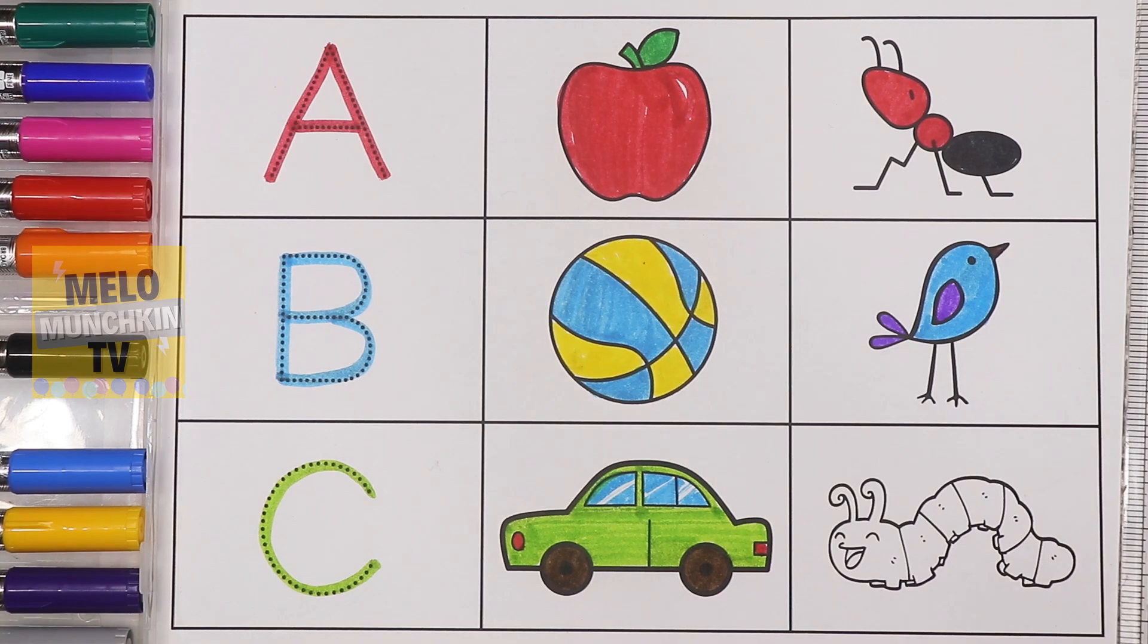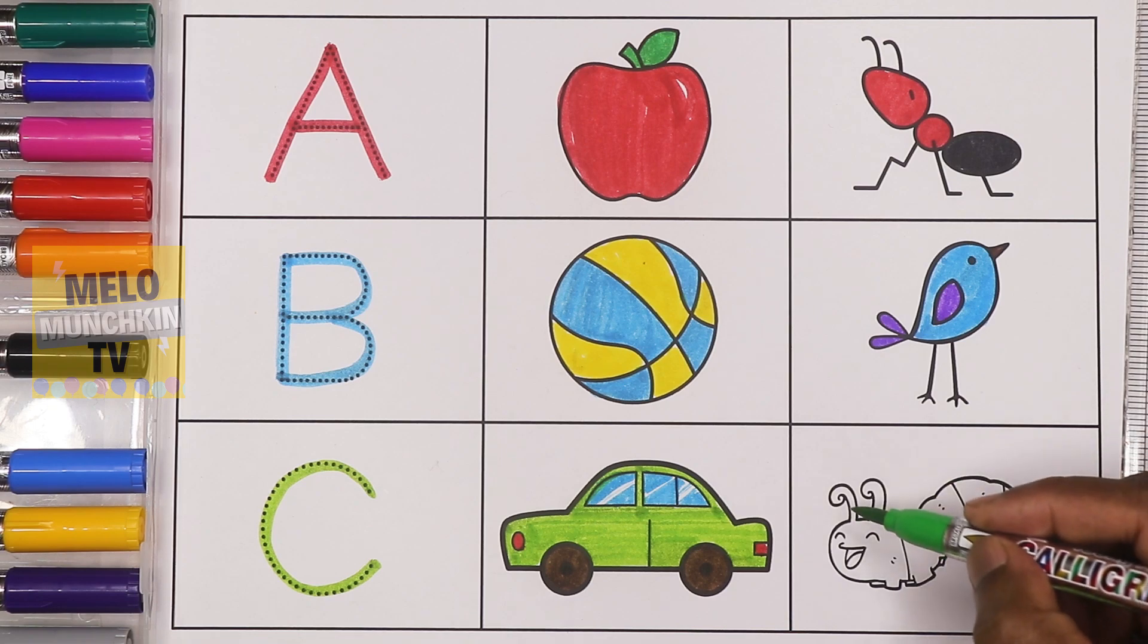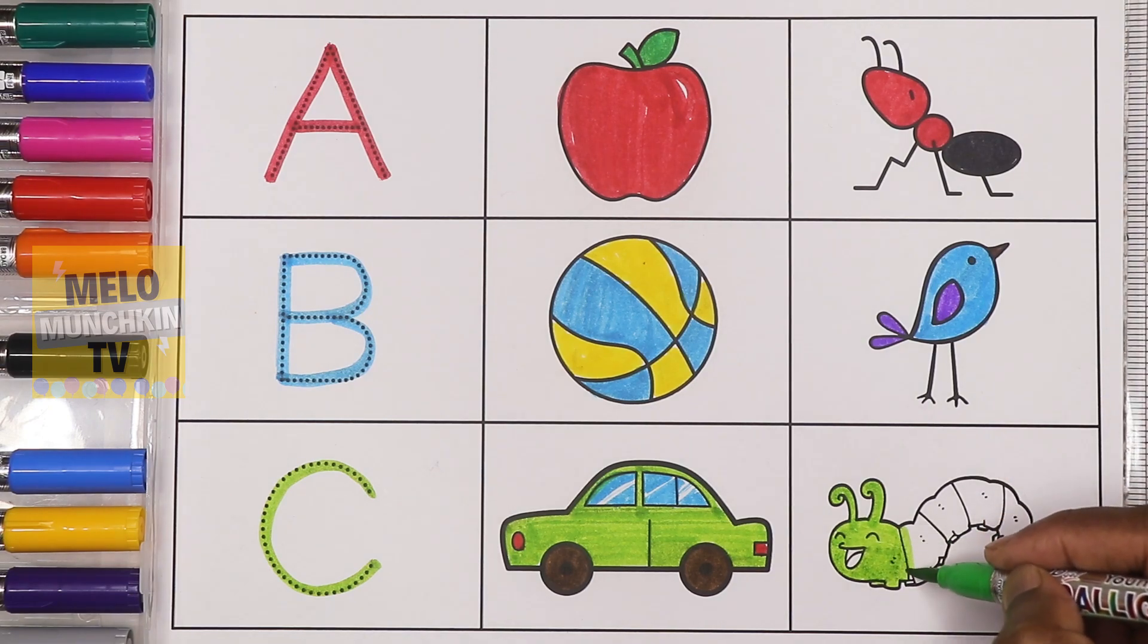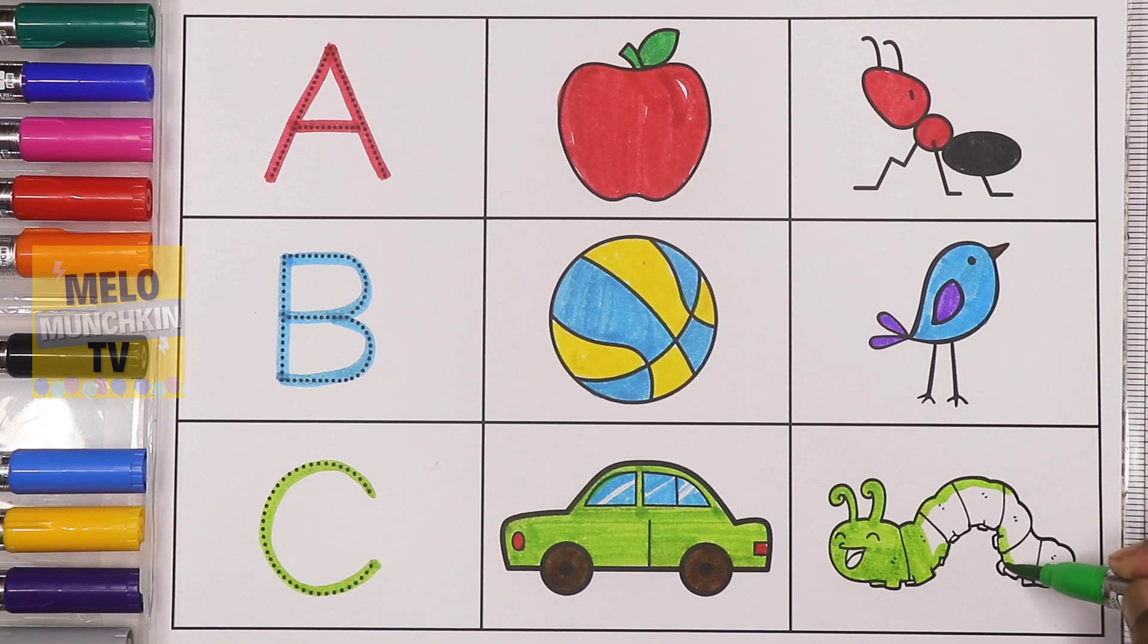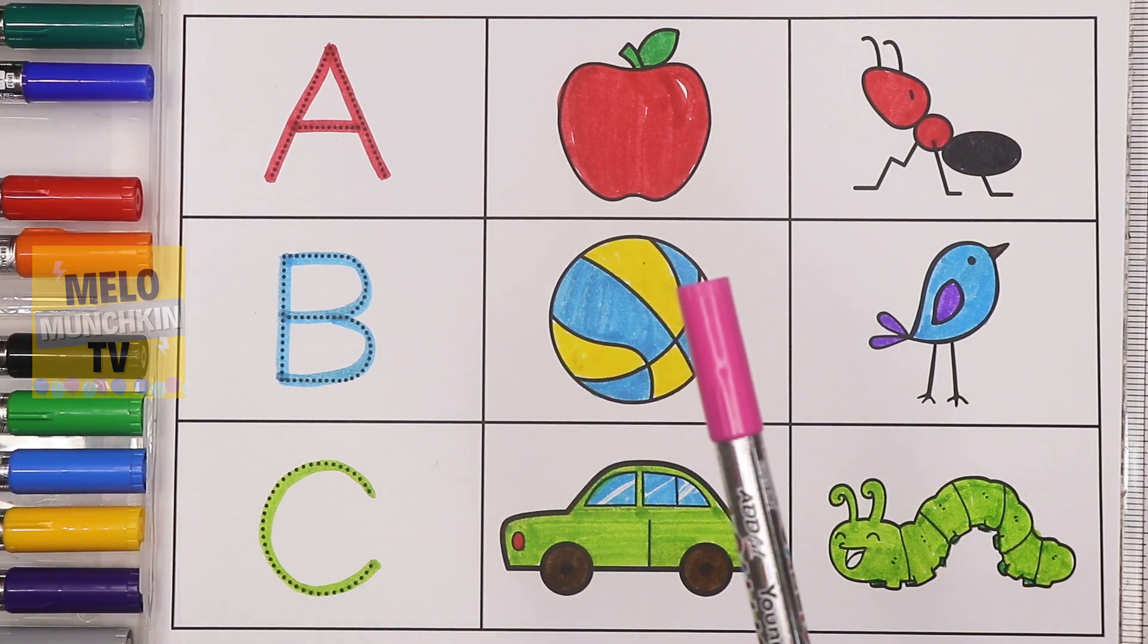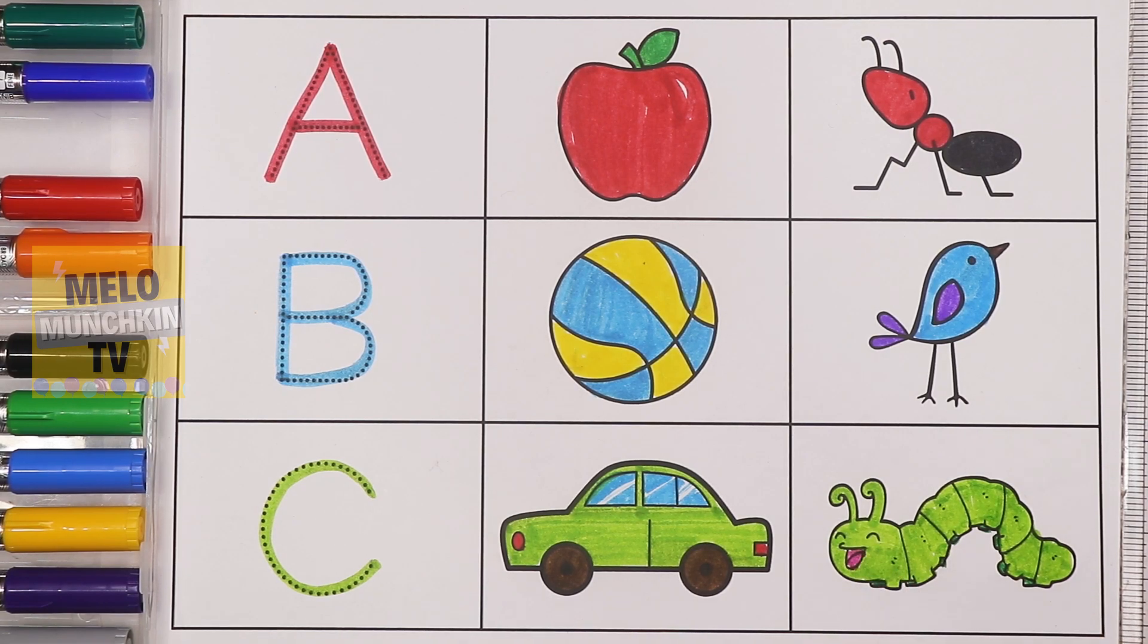Green color. C for caterpillar. C for caterpillar. Dark green color. Pink color. So C for caterpillar. C for caterpillar.